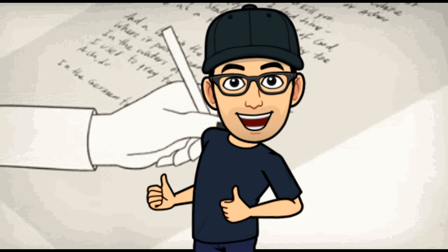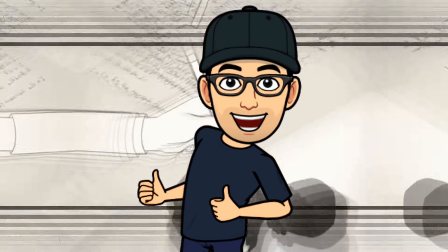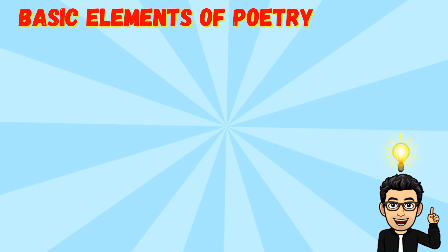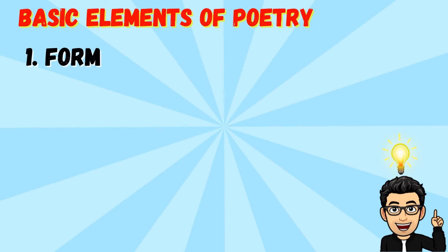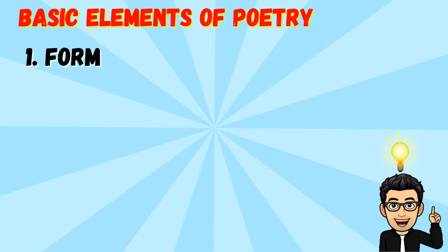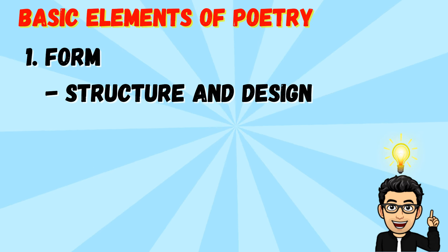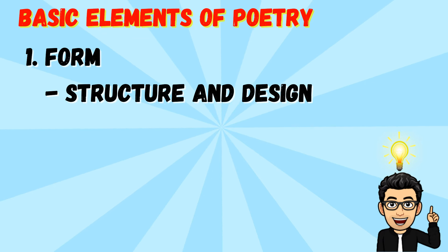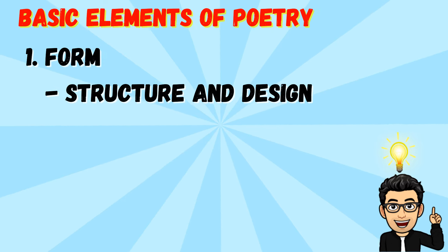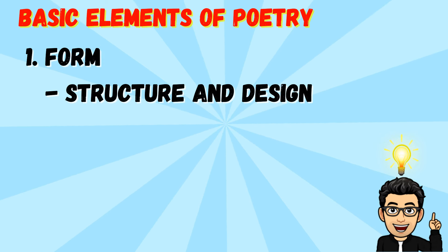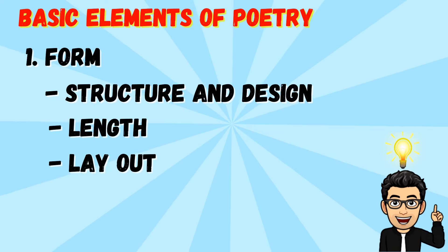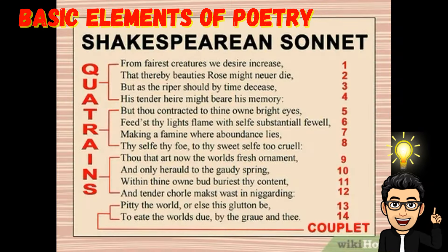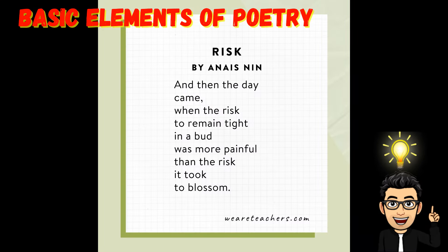Here are the basic elements of poetry. The first one is form. Form refers to how the poem is put together — its structure and design. This includes things like how it rhymes, the rhythm of the words, how the lines are grouped into stanzas, and how it looks on the page. It is basically the structure of a poem, which includes its length, layout, and rhyme scheme. Common forms include sonnets, haikus, limericks, and free verse.